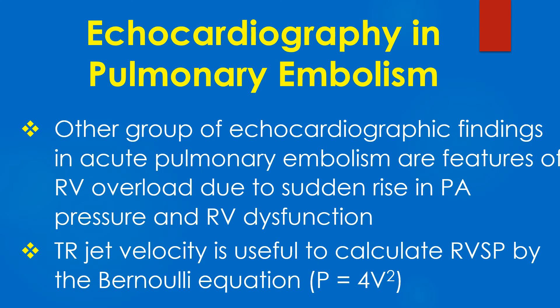The other group of echocardiographic findings in acute pulmonary embolism are features of right ventricular overload due to sudden rise in pulmonary arterial pressure and right ventricular dysfunction.